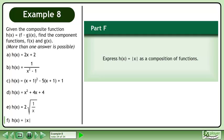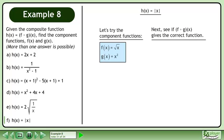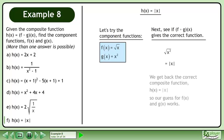In part f, express h equals the absolute value of x as a composition of functions. Let's try the component functions f equals the square root of x and g equals x squared. Next, see if f gives the correct function. Plug g into f. The square root of x squared is the absolute value of x. We get back the correct composite function h equals the absolute value of x, so our guess for f and g works.